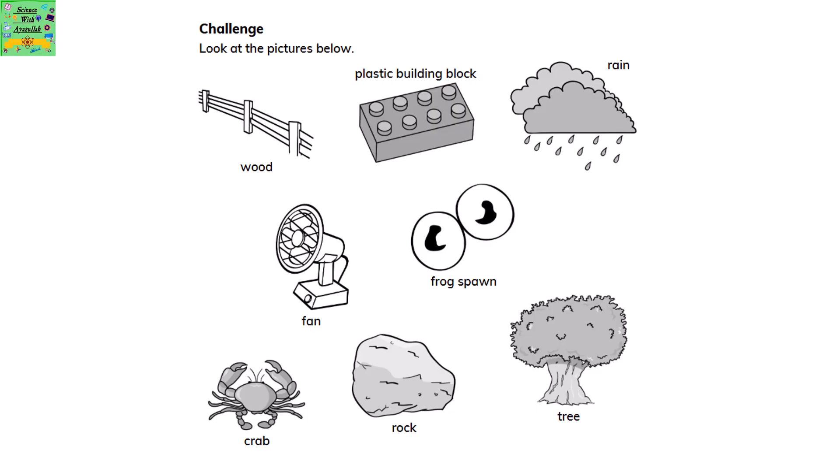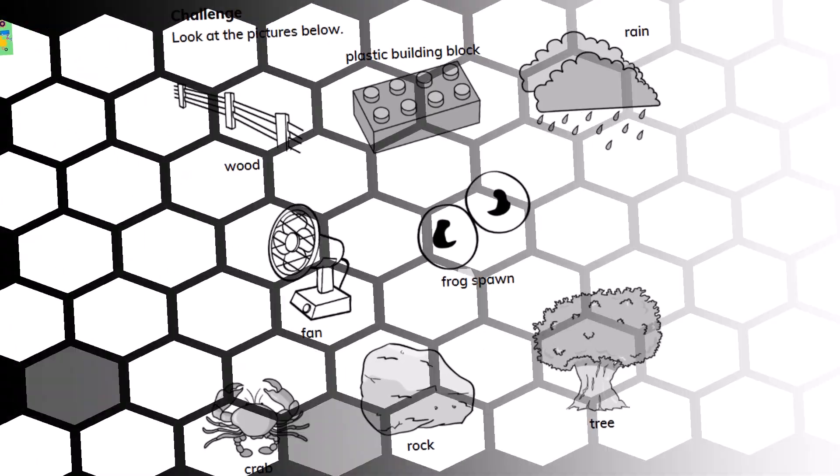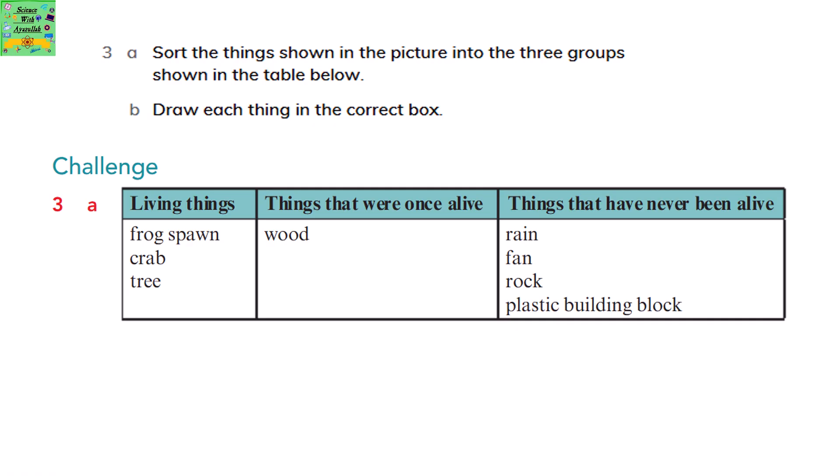Look at the pictures below. It's of wood, plastic building block, rain, fan, frog spawn, crab, rock and tree. Sort the given things shown in the picture into three groups shown in the table below. Draw each thing in the correct box.